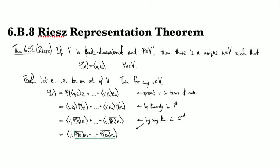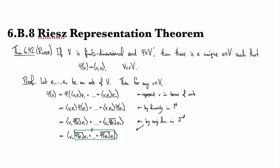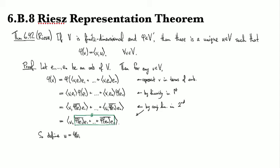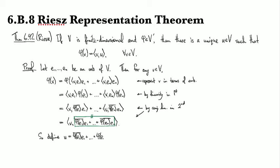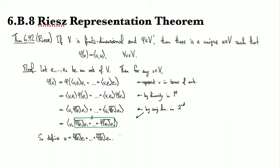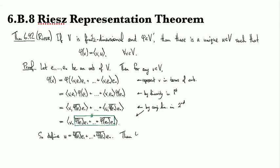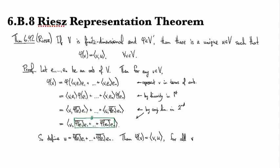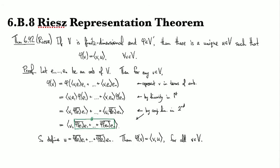And then look at that, there's my u. So I'm going to define u to be Φ of e1 conjugate e1 plus et cetera, Φ of en conjugate en. And then I have, and so all this whole thing worked for any generic v. So it works for all v in my inner product space. And the only thing left to show is the uniqueness.